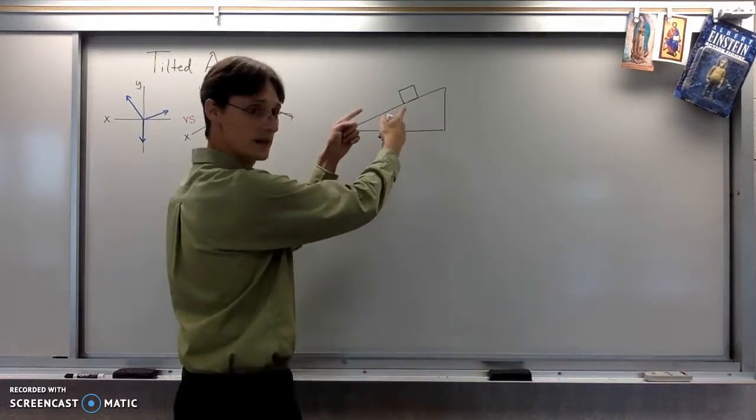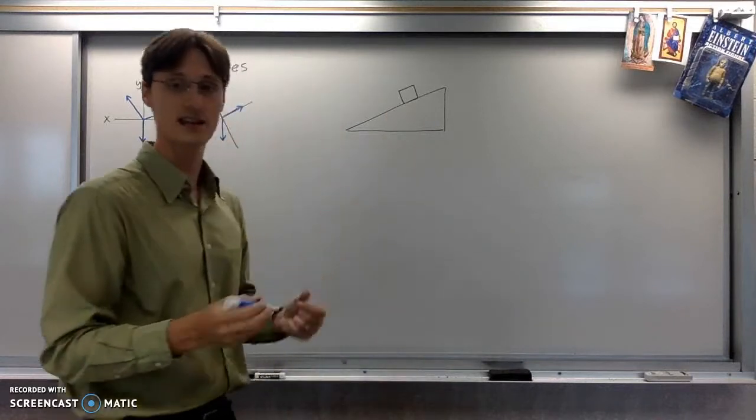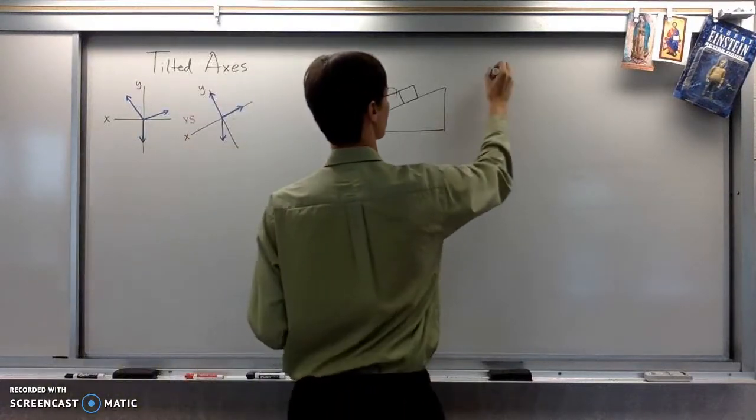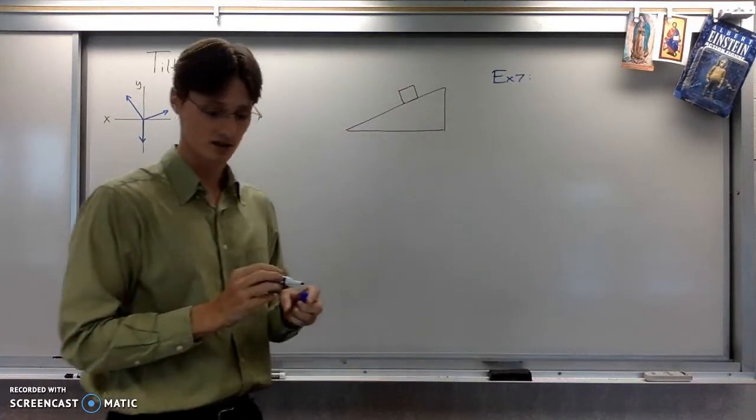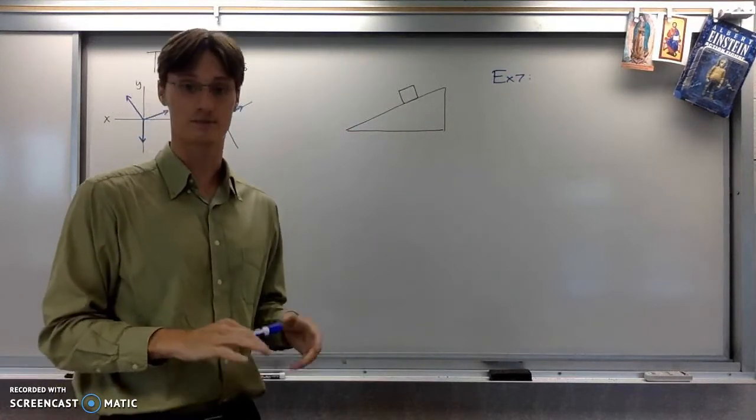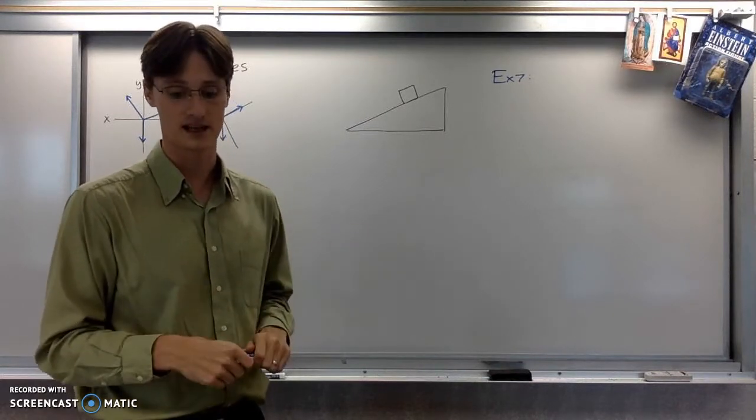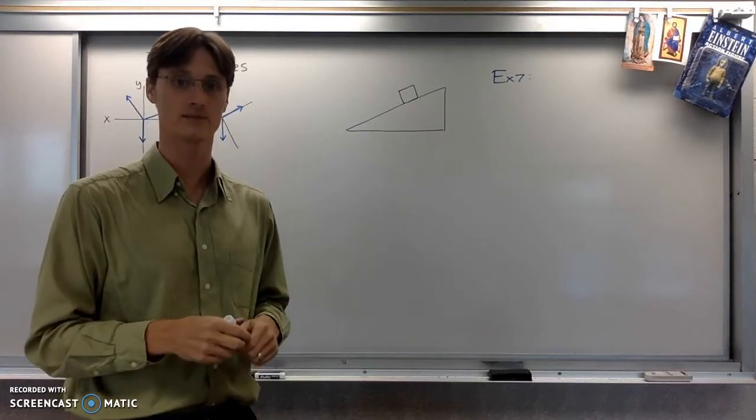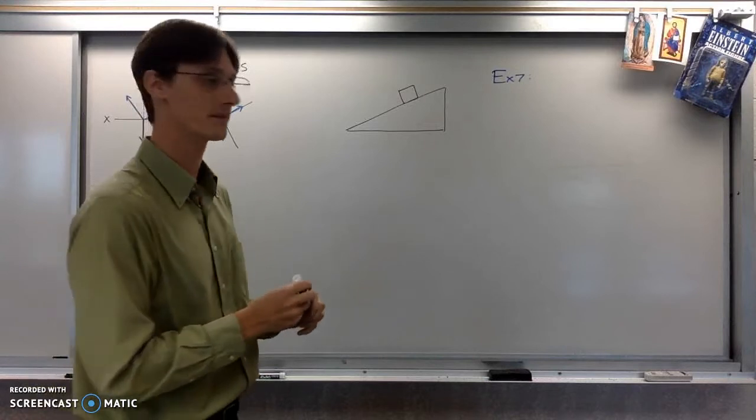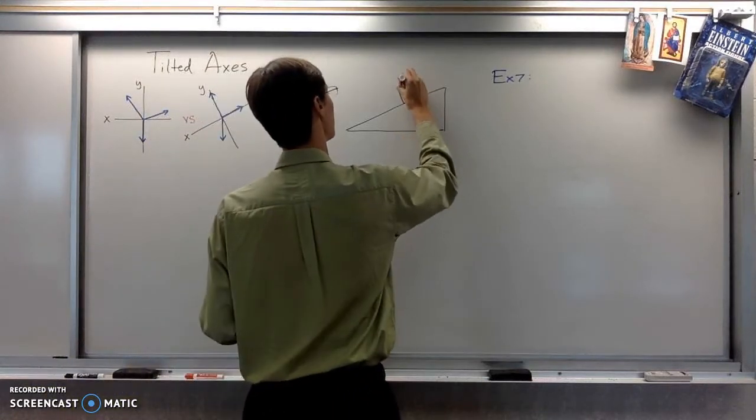All right, so this is basically the force diagram for this question. This is example seven in your notes packet. The question does start off by saying that we've got a block accelerating from rest down an inclined plane, and we're supposed to act as though it's frictionless to start with. I'm going to go ahead and include friction in our force diagram, but yes, it'll be initially frictionless.